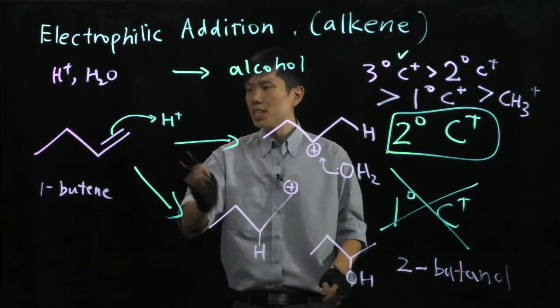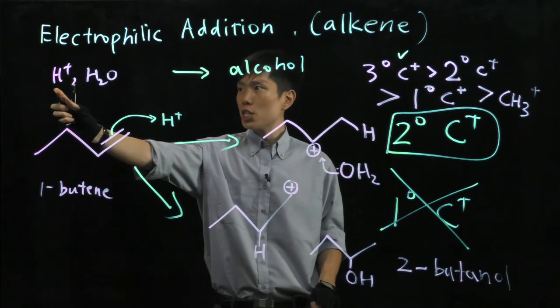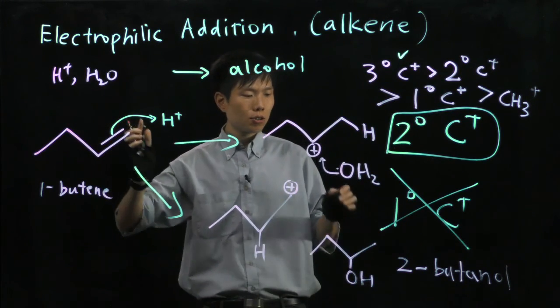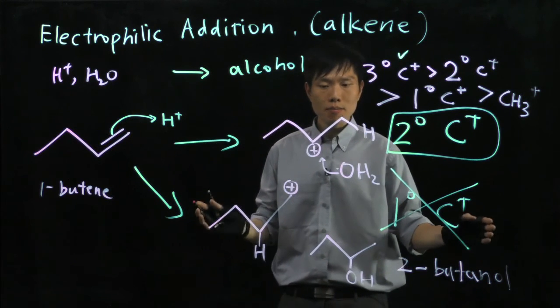So from here you see that from 1-butene, if you put in these reagents, the acid and water, you could only get 2-butanol as a major product.